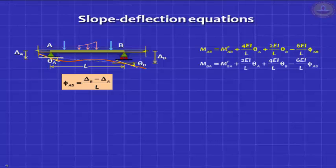MAB equals MF_AB plus 4EI/L*theta_A plus 2EI/L*theta_B minus 6EI/L*phi_AB, or if you want minus 6EI*delta divided by L squared. Both are equivalent.